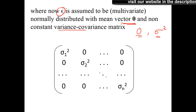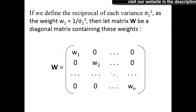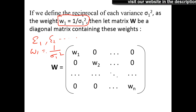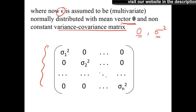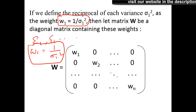We have the variance-covariance matrix, which relates to all observations in our dataset. With this in mind, we define the weight of an observation as the reciprocal of its variance. Each error term is associated with a single observation — error 1, error 2, and so on. So weight 1 is defined as 1 divided by sigma 1 squared. The covariances of the errors are all zero; only the variances sigma 1, sigma 2, etc. matter.